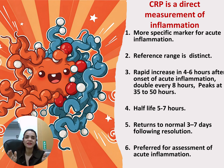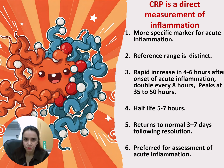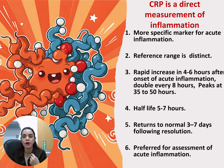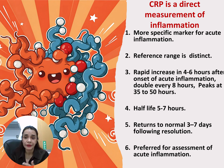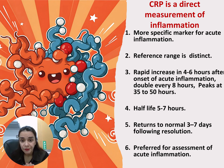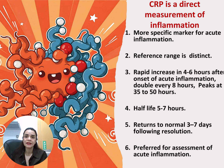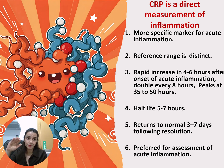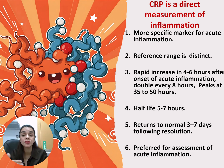The reference range for CRP is distinct — it does not differ by age or sex; we have a single cutoff. CRP rises rapidly within four to six hours after the onset of inflammation in the body, doubles every eight hours, and peaks at its highest value around 35 to 50 hours. Its half-life is about five to seven hours. All of this means that when there is acute inflammation, CRP goes high very quickly, reaches its peak quickly, and then returns to normal quickly. This makes it very good for diagnosing and monitoring patients.